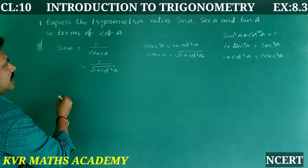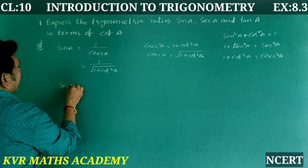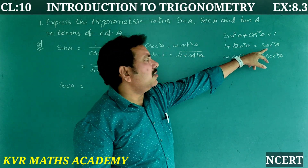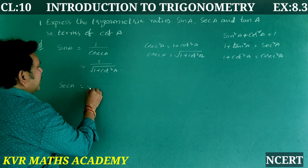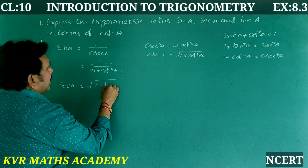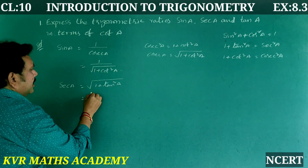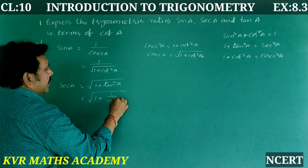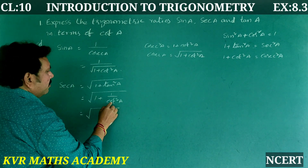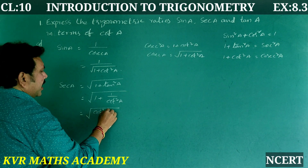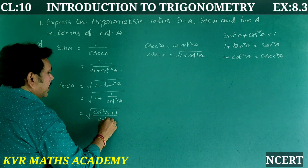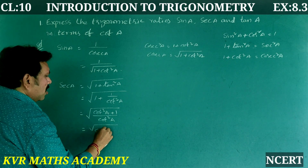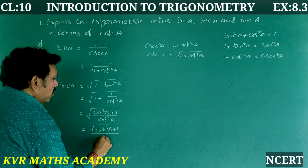Next, let's find secant A in terms of cot A. sec²A = 1 + tan²A, and tan A = 1/cot A, so tan²A = 1/cot²A. Therefore, sec A = √(1 + 1/cot²A) = √((cot²A + 1)/cot²A), which gives sec A = √(cot²A + 1) / cot A.